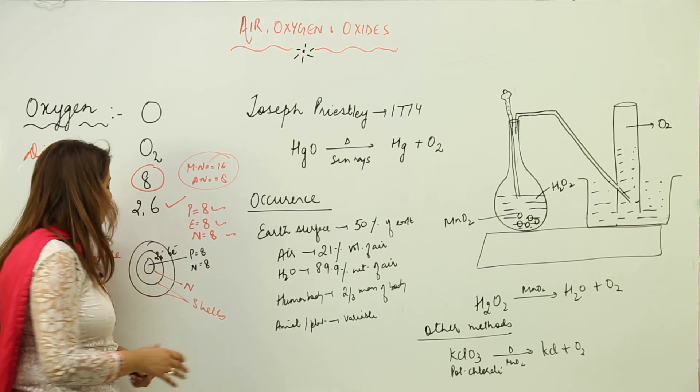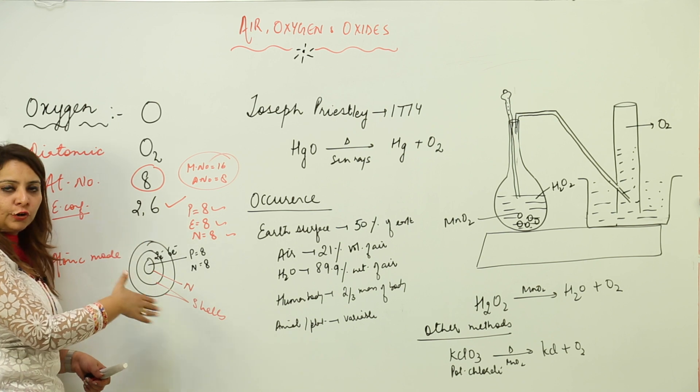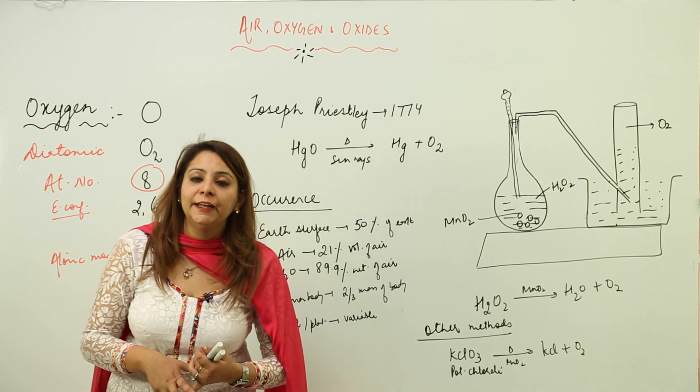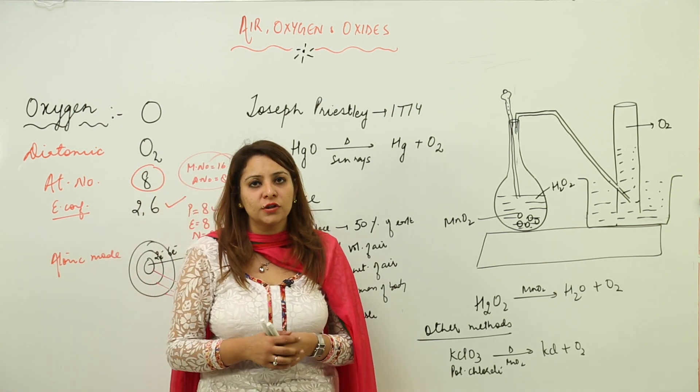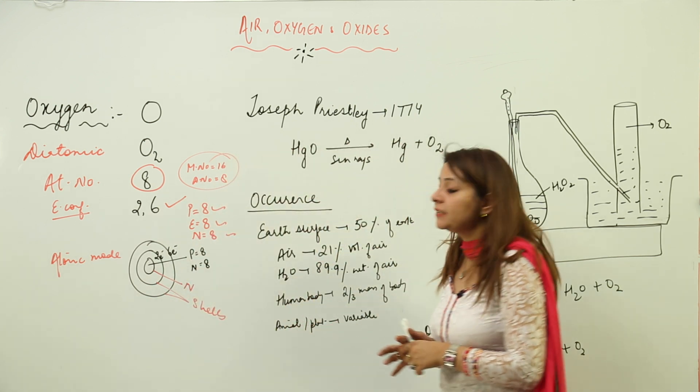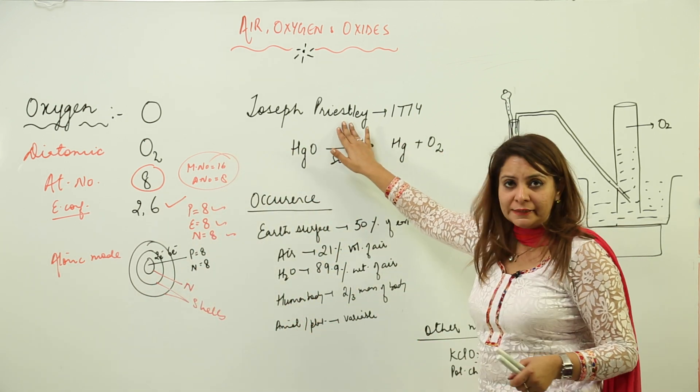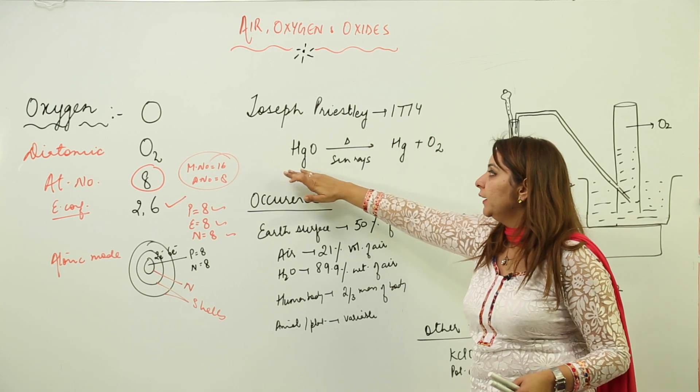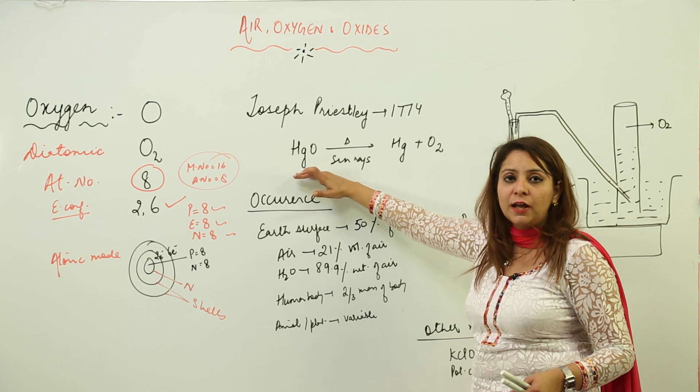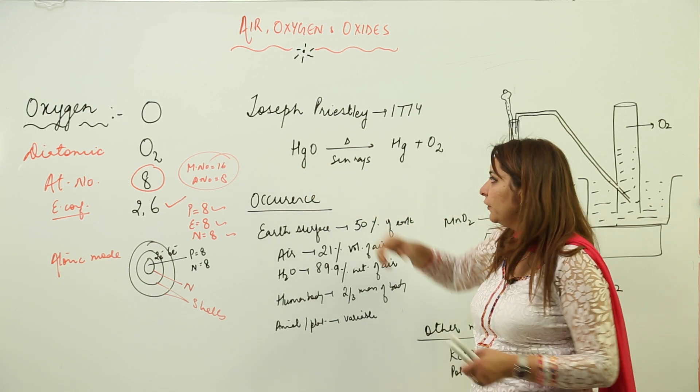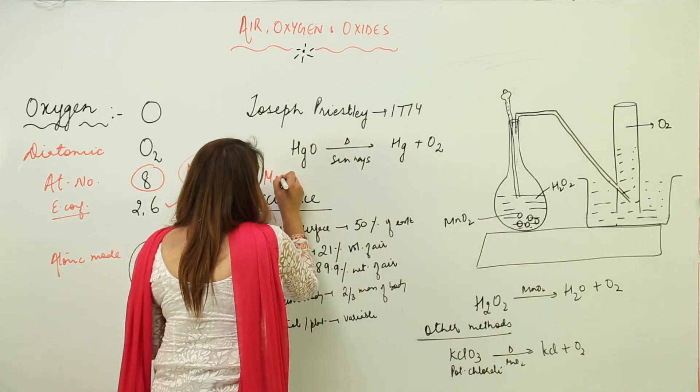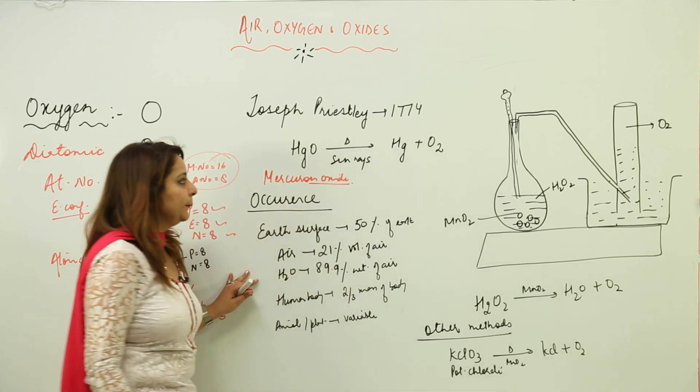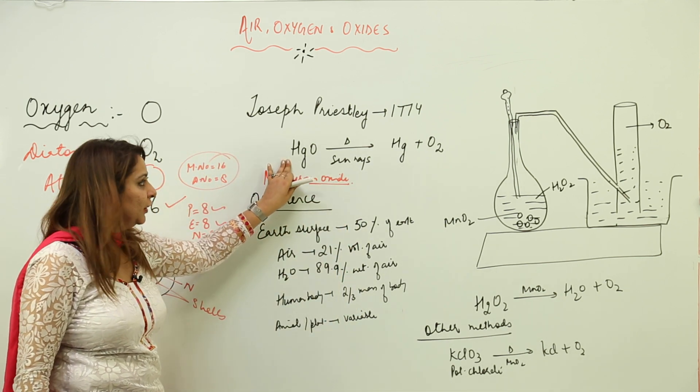So we can actually calculate electrons, protons, and neutrons by making use of atomic and mass numbers. So this is the atomic model for the oxygen atom. Now, how was oxygen discovered—like, who was the one who discovered oxygen and who named it? There was a scientist, Joseph Priestley, who in 1774 discovered this gas. How? He actually carried out the decomposition of HgO in presence of sun rays—that means mercuric oxide.